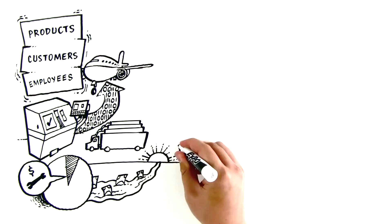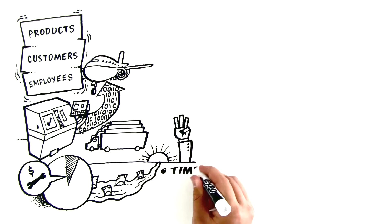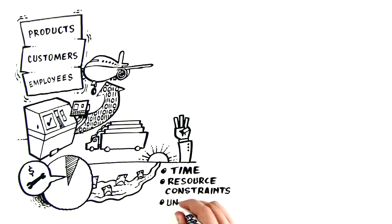So, what's the big deal? Well, actually, there's three. Time, resource constraints, and the unexpected.